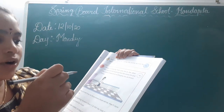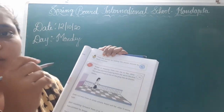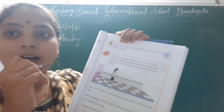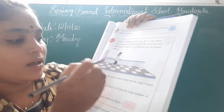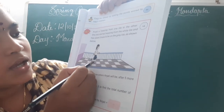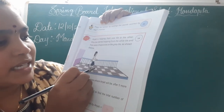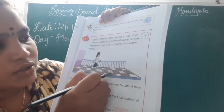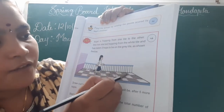Draw cover lines to show where Anjali will be after 5 more hops. So now she is in the grey tile. Now count: 1, 2, 3, 4, 5.